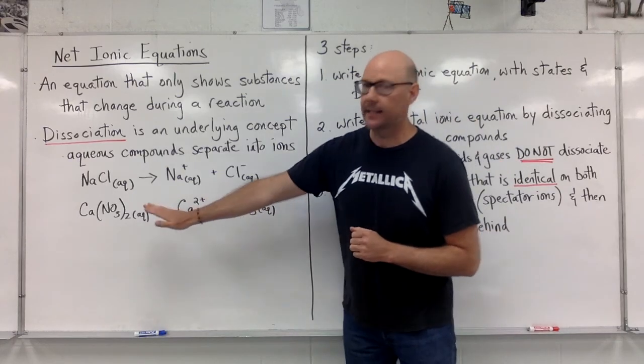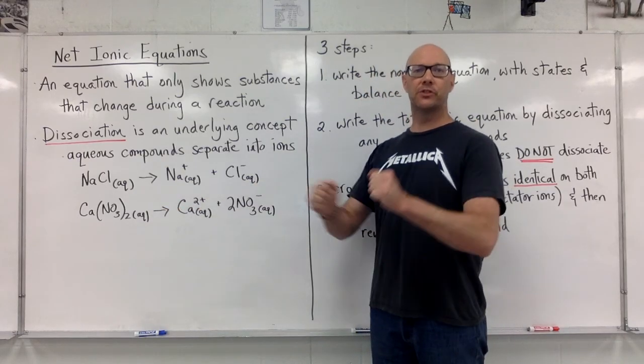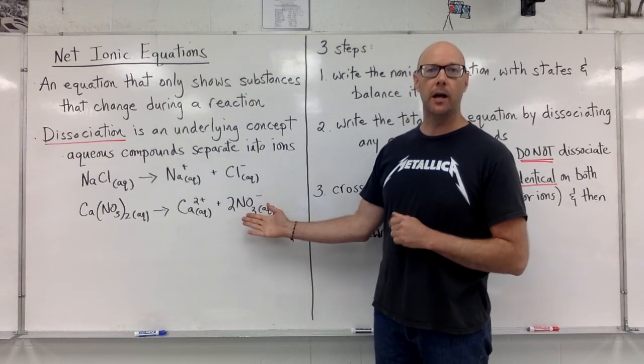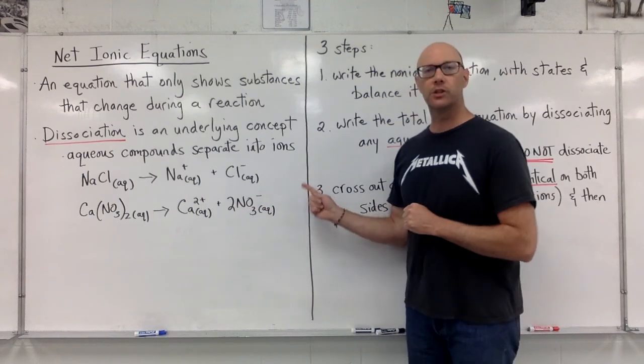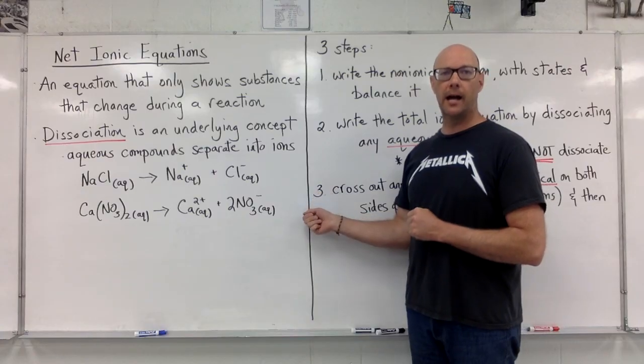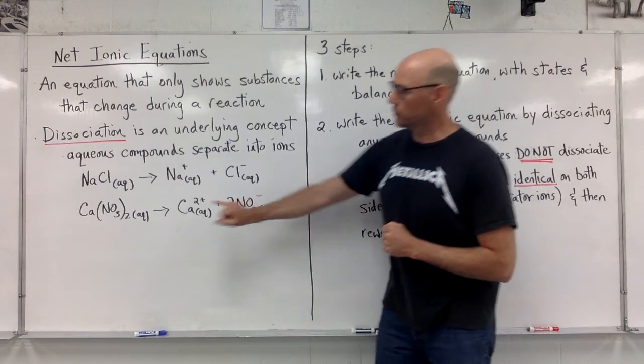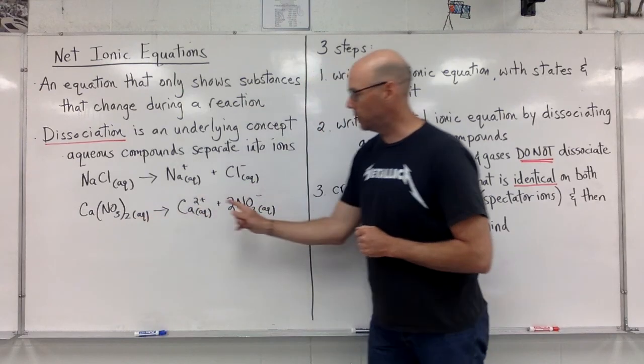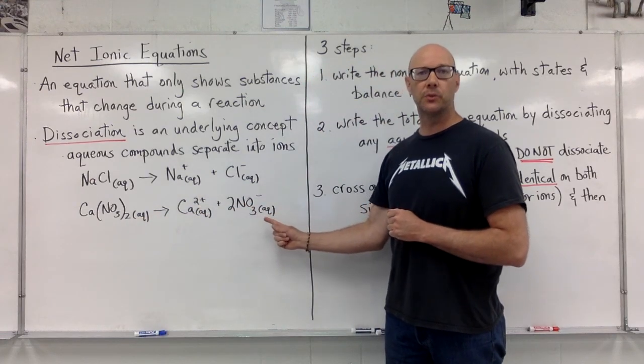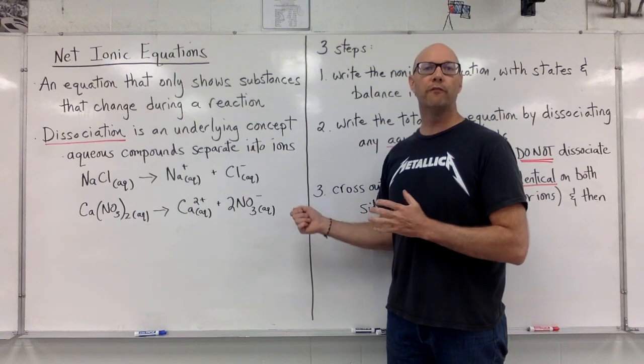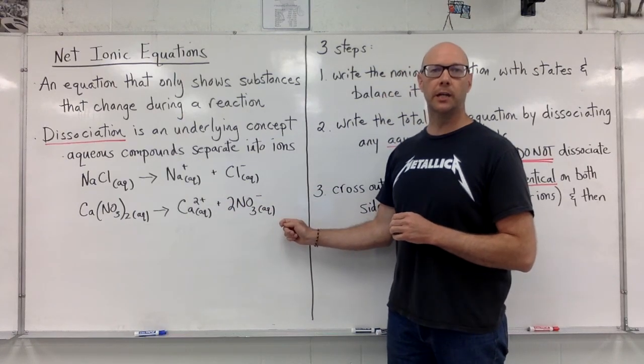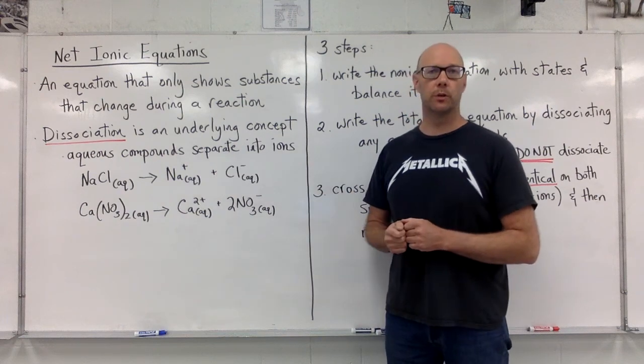A second example, calcium nitrate dissociating, separating into its ions, a calcium ion, 2+, and 2 nitrate ions. Notice that because we had two nitrates present in the original compound, we had to balance that dissociation equation with a coefficient of 2. Once more, the ions themselves were aqueous, as was the original chemical.